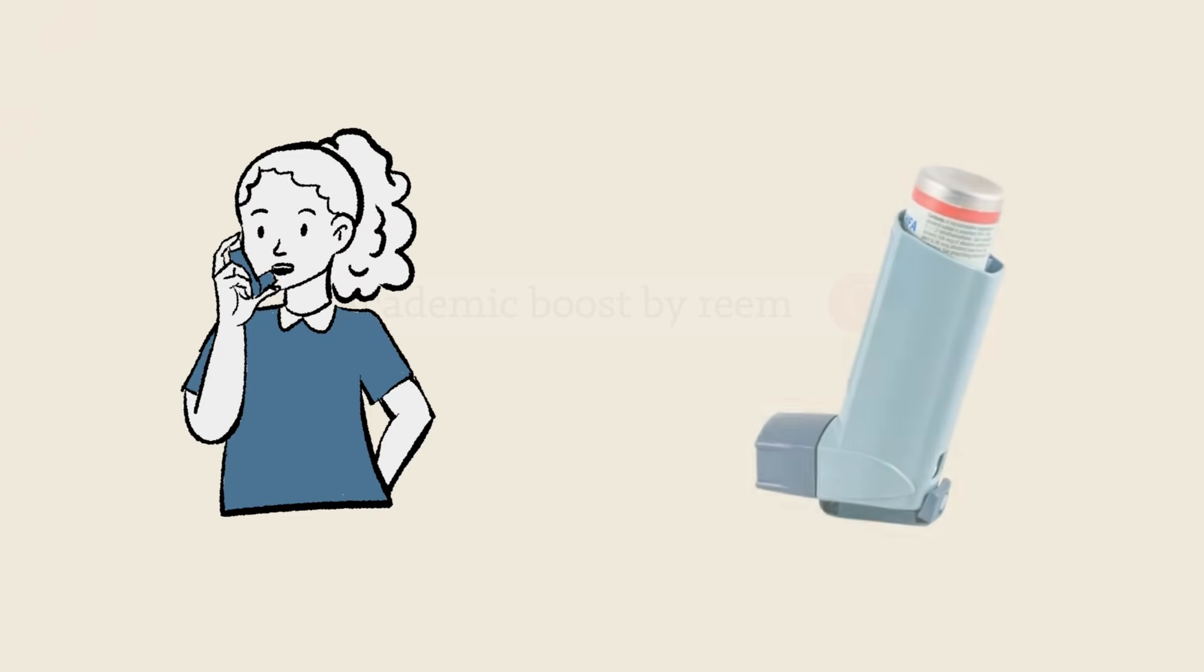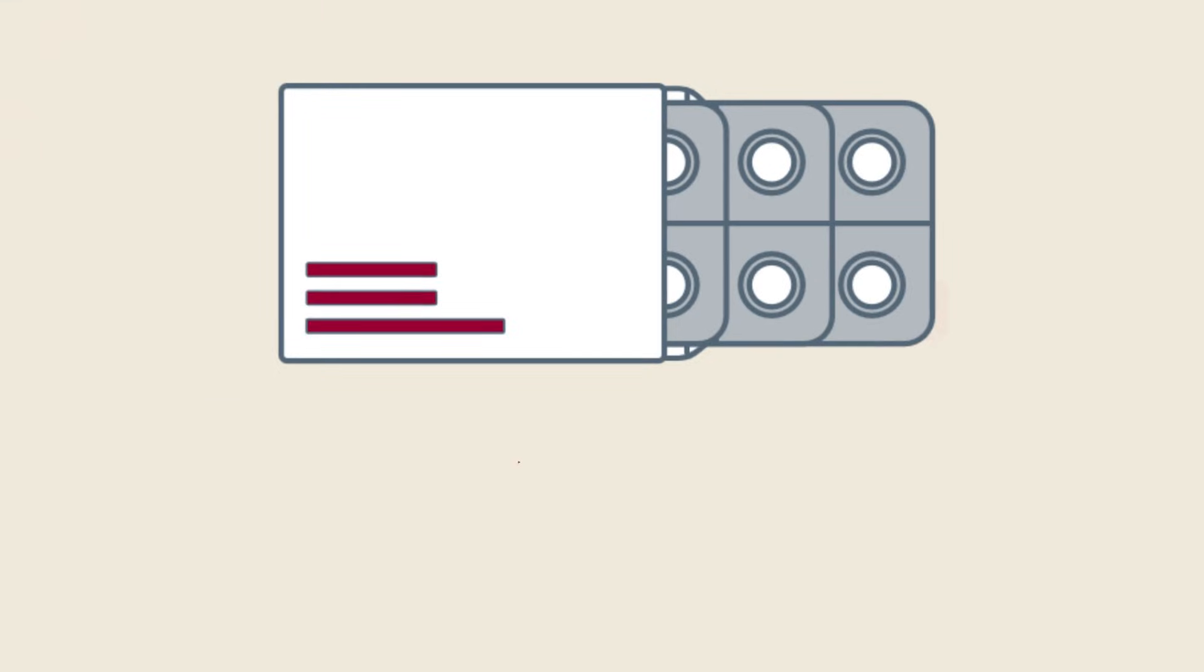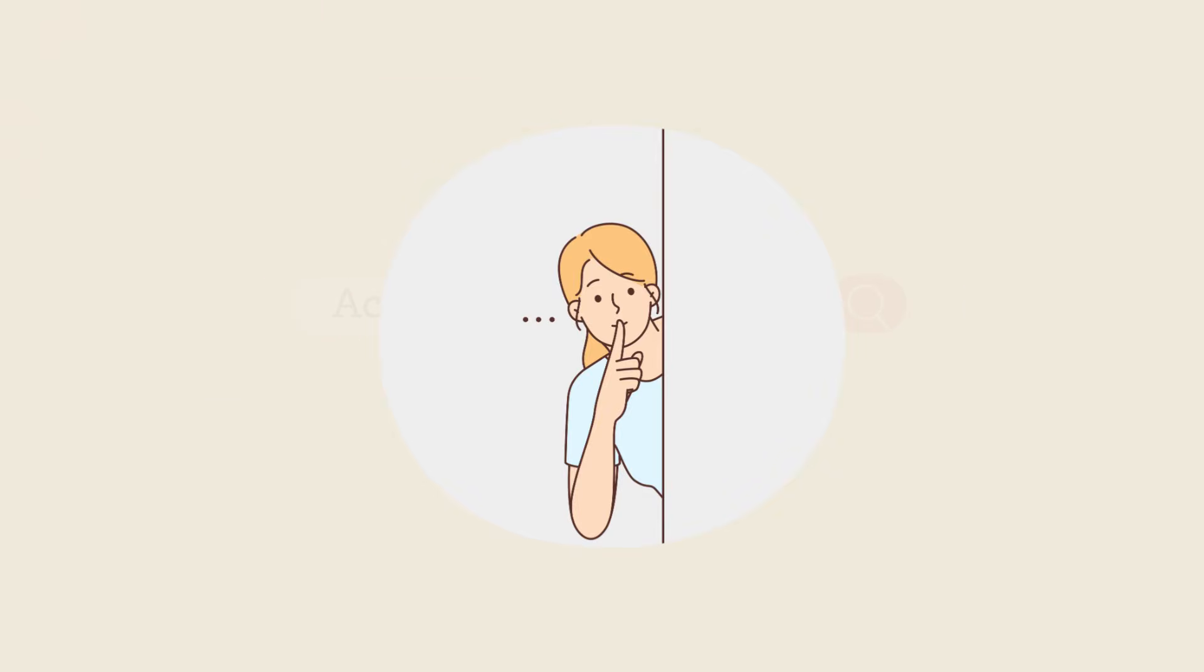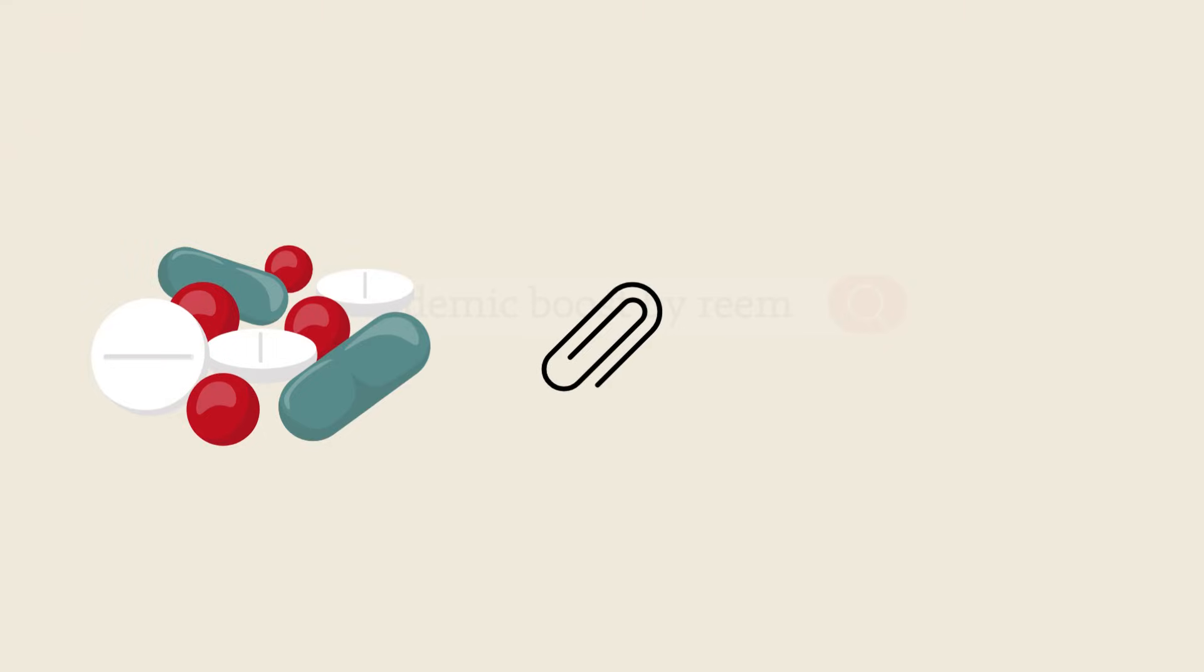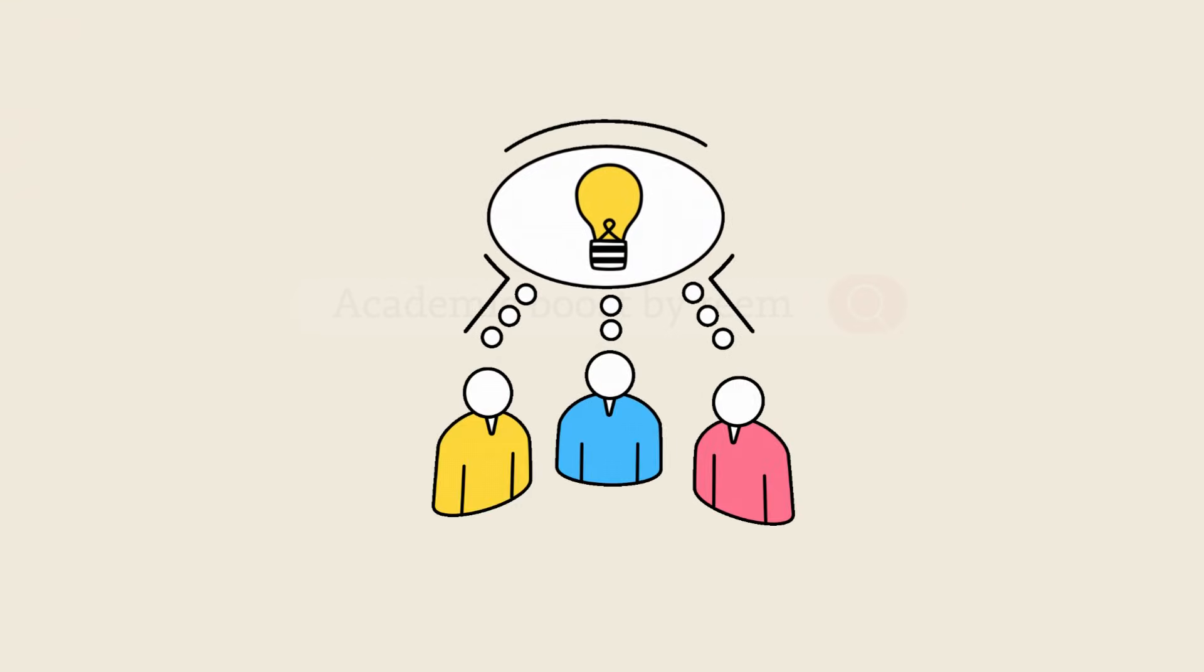Ever wonder why albuterol can open your airways in seconds or propranolol can calm your racing heart? The secret lies in how these drugs interact with their receptors, something called intrinsic activity. Let's simplify this so it finally makes sense.